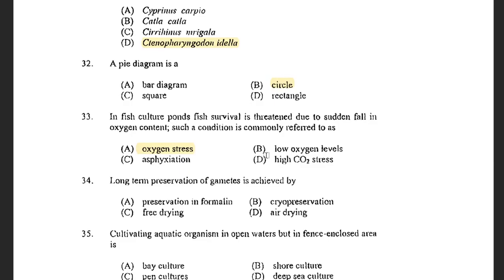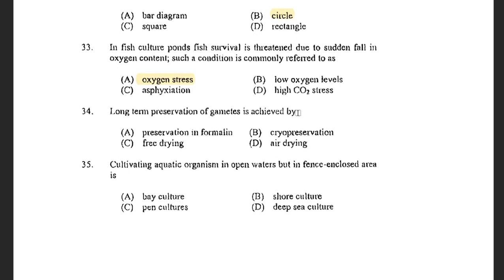Next question: Long term preservation of gametes is achieved by — options are preservation in formalin, cryopreservation, freeze drying, and air drying. The answer is cryopreservation. Cryopreservation is done mostly for preservation of milt, and cryopreservation can preserve gametes for at least more than 40 years.